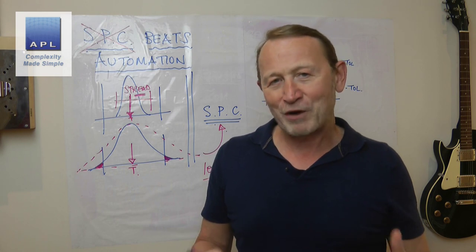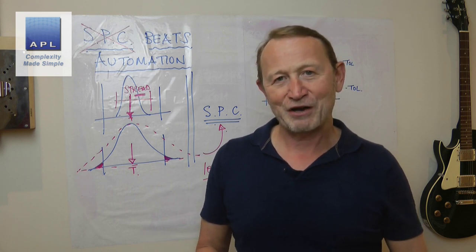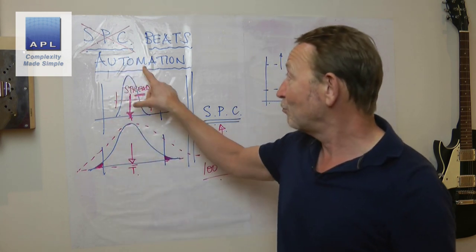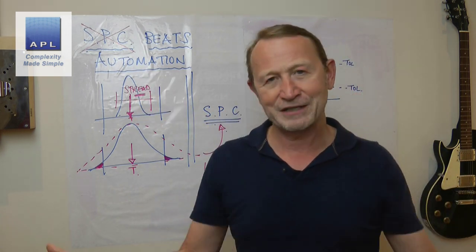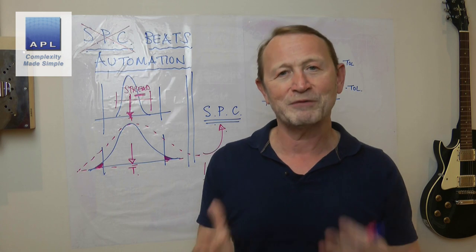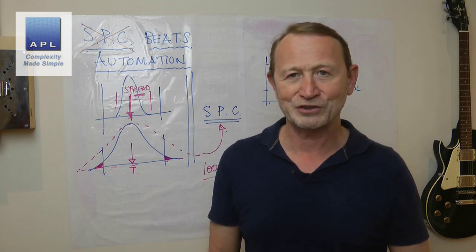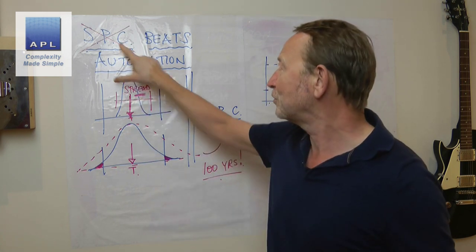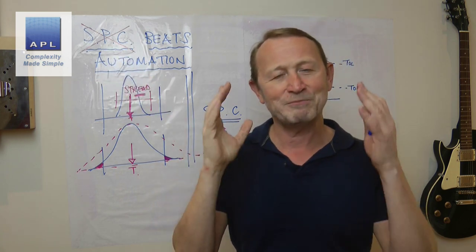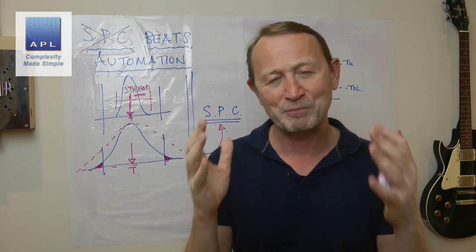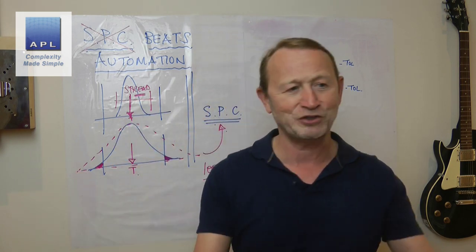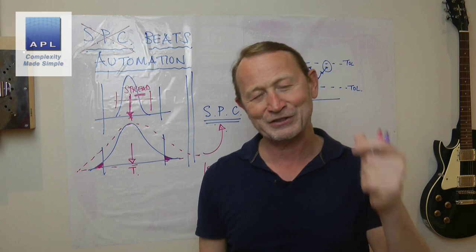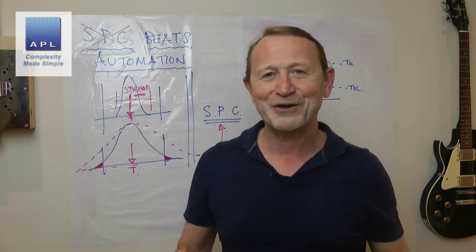So SPC will always beat stupid automation, and DOE is always going to beat artificial intelligence. Let's make sure that we put these things together and behave as intelligently as we possibly can. And then with the power of automation and the power of SPC, man alive, you are gonna make bucket loads of cash.